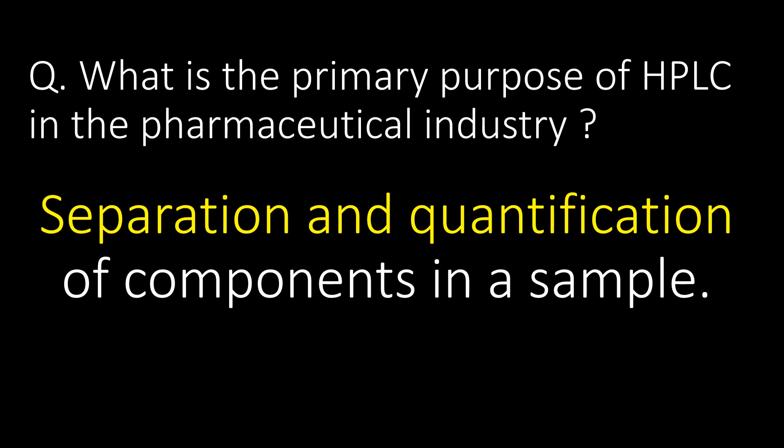What is the primary purpose of HPLC in the pharmaceutical industry? The primary purpose of HPLC in the pharma industry is separation and quantification of components in a sample.